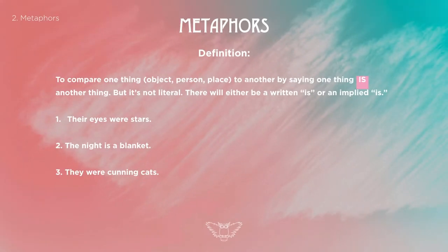A metaphor is to compare one thing — object, person, or place — to another by saying one thing is another thing. But it's not literal. There will either be a written 'is' or an implied 'is'.